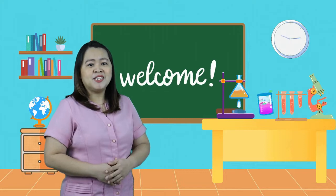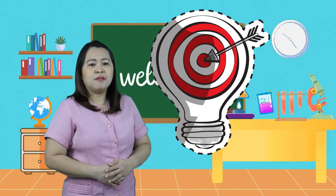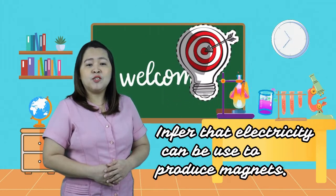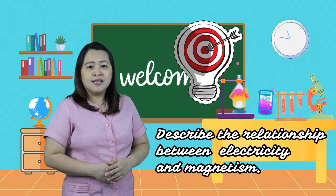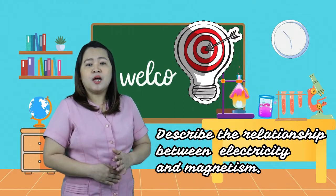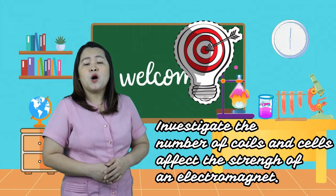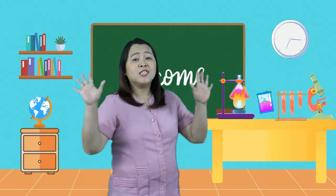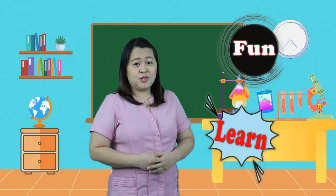For today's side target, we will infer that electricity can be used to produce magnets, describe the relationship between electricity and magnetism, and investigate how the number of coils and cells affect the strength of an electromagnet. There are lots of activities that are full of learning and fun. Would you like to come with me? Come on, let's go!